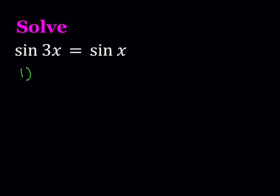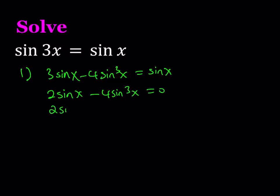The first method basically involves using the formula for sine of 3x. Sine of 3x can be written as 3 sine x minus 4 sine cubed x. If I do that and put everything on the same side, I get the following. Then I can factor out 2 sine x.